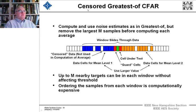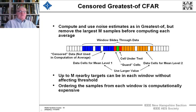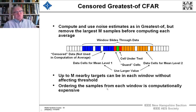Another method is the censored greatest-of CFAR. We examine individual cells on either side, and if any appear significantly greater than — say, several standard deviations above — the estimated standard deviation of the window samples, we discard them as likely spurious targets. We then again use the larger of each side's estimate. Ordering samples from each window is computationally intensive, but with Moore's law these computations become easier.